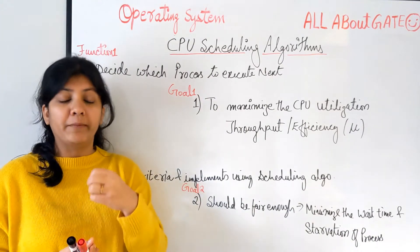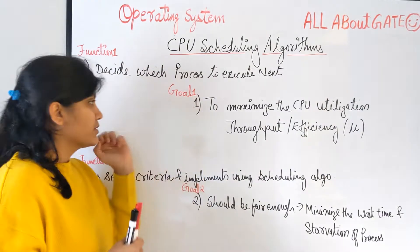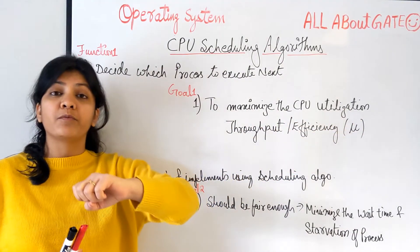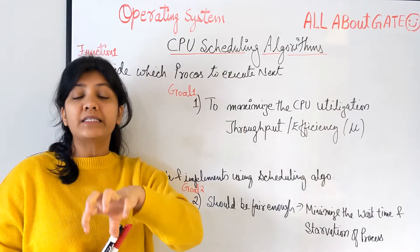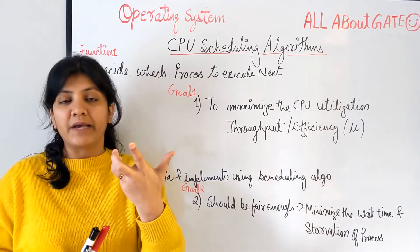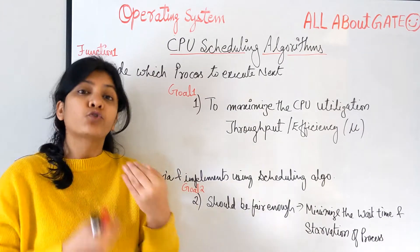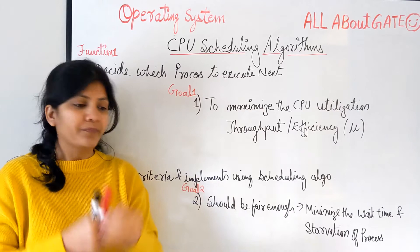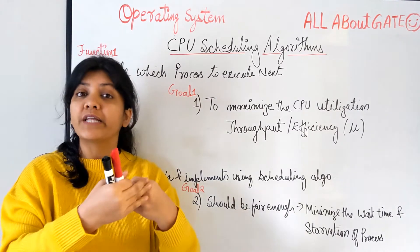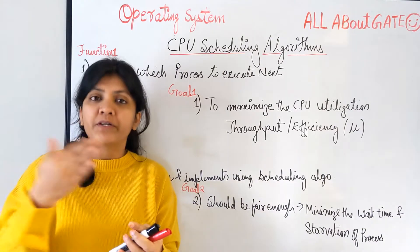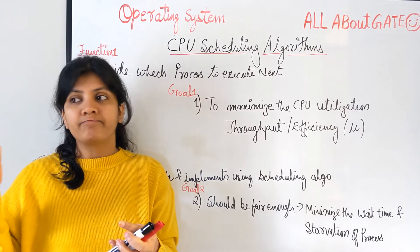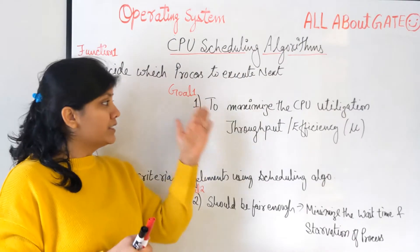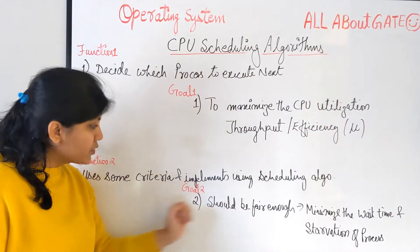Now, what are the goals these algorithms strive to achieve? The most important goal is to maximize CPU utilization, meaning the CPU should be kept busy so we can maximize efficiency. Maximizing CPU utilization means increasing the throughput of the system. Throughput is nothing but the number of processes executed per unit of time — it could be per second, per millisecond, or per minute, depending on the system.